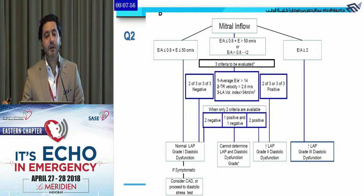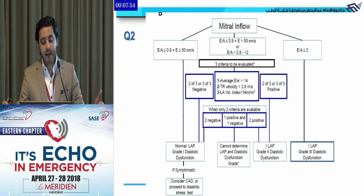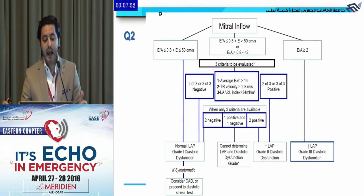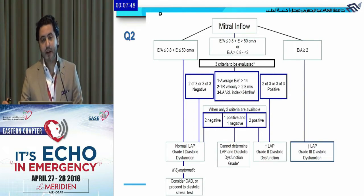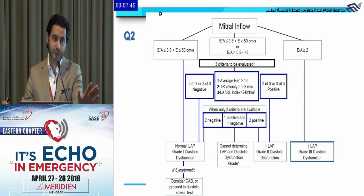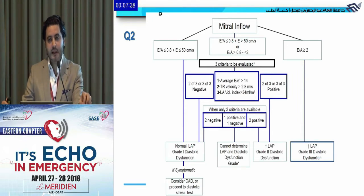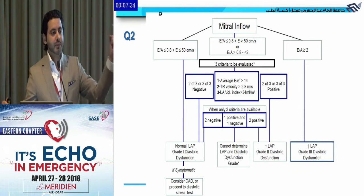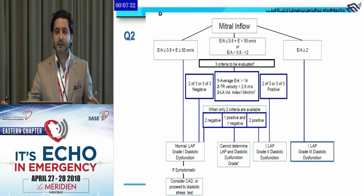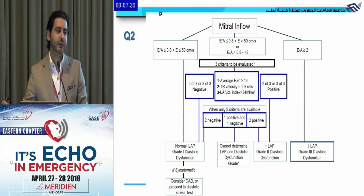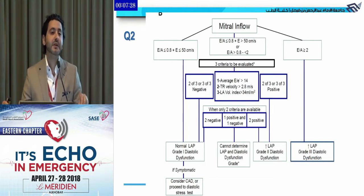The three items are: average E over E prime more than 14; TR velocity more than 2.8; and LA volume more than 34 ml per meter squared. If 2 out of 3 are abnormal, LA pressure is elevated and it is grade 2. If most are normal, it is grade 1 with normal LA pressure. If one is positive, one is negative, and the third is unavailable, it is indeterminate.